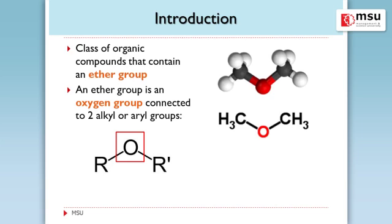If you try to review your alkyl groups, you can use the mnemonic: M, M, B, P, H, N — methyl, ethyl, propyl, butyl, and so forth. This is a mnemonic device. If you've forgotten your alkanes or alkyl groups, you can memorize with this one — from methyl until the last one.